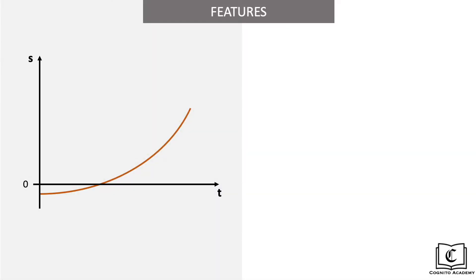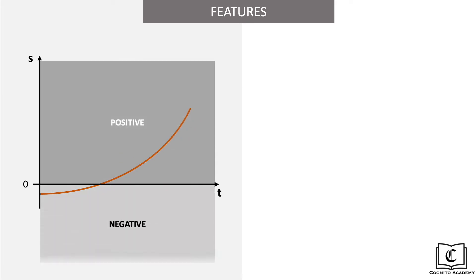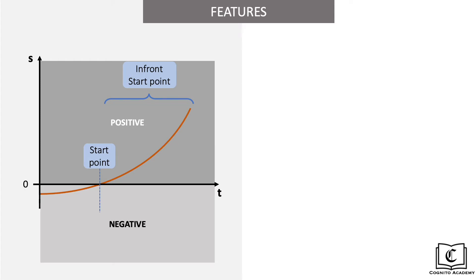Let's first cover the various features of the displacement time graph. What does positive or negative displacement mean? We see two portions in this graph, the positive and negative portions. Displacement equals 0 meters just means that the object is at the start point, while positive displacement means the object is in front of the original start point, and negative displacement means it is behind the original start point.